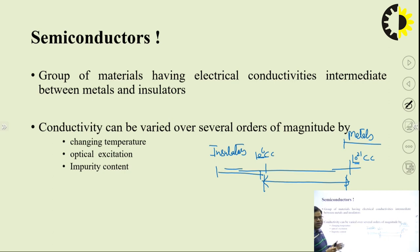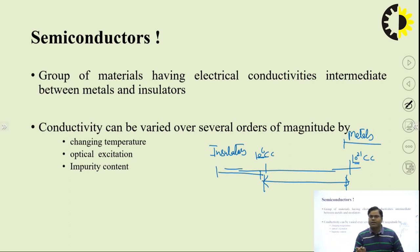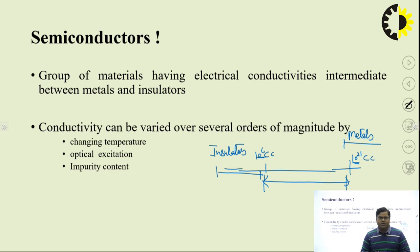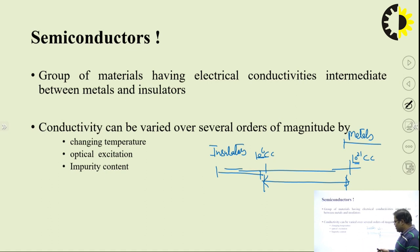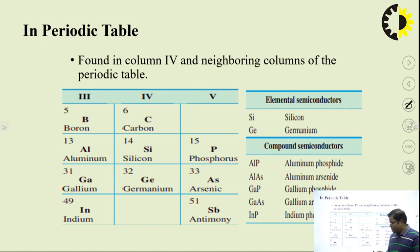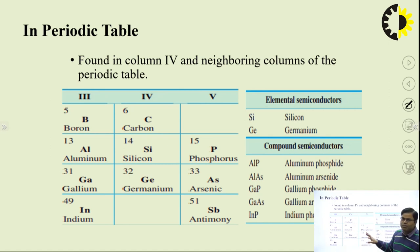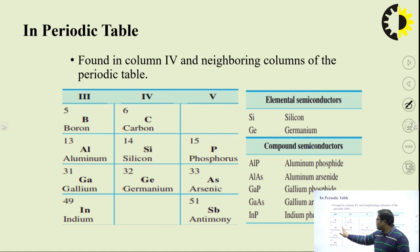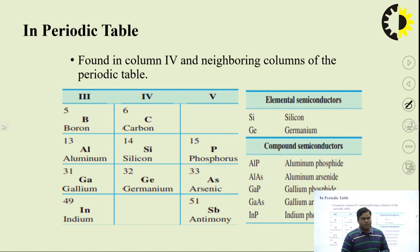There are many ways by which conductivity of semiconductors can be varied: by changing temperature, by providing optical excitation, or by adding some impurity content through doping. There are many applications of semiconductors — we can use semiconductors as conductors or insulators. In particular, the column four compounds silicon and germanium are the most extensively used semiconductors. By combining column three and column five compounds, we make compound semiconductors like gallium arsenide and indium phosphide.